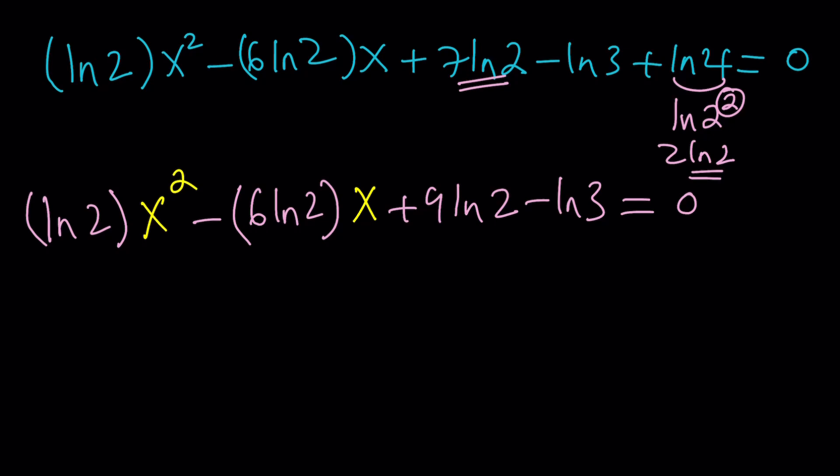Now using the quadratic formula we're going to get negative b which is 6 ln 2 plus minus the square root of b squared minus 4ac. But instead of doing this let's find the discriminant first and simplify as much as possible because we're going to keep writing it over. This will save us some time. What is the discriminant, the delta, in a quadratic equation? b squared minus 4ac, right? So b squared, we can ignore the negative sign when we square it, minus 4ac. a is ln 2 and c is 9 ln 2 minus ln 3.